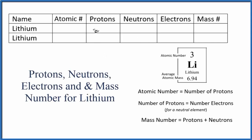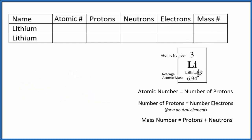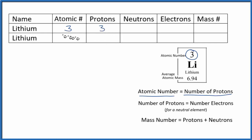In this video we'll take a look at the number of protons, neutrons, electrons, and the mass number for lithium (Li). Lithium on the periodic table has an atomic number of three, so we can right away write that the atomic number is three. The atomic number means it's the number of protons, so lithium is going to have three protons. We'll look at two different isotopes of lithium, but lithium always has an atomic number of three and always has three protons.